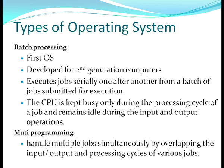Multiprogramming systems, as the name suggests, handle multiple jobs simultaneously by overlapping the input, output, and processing cycles of various jobs. This covers the disadvantage of batch processing where the CPU was lying idle — because jobs run simultaneously, whenever the CPU is idle it takes up the next job, so input, output, and processing functions go on concurrently.